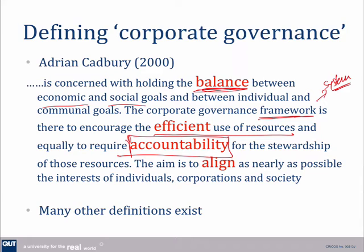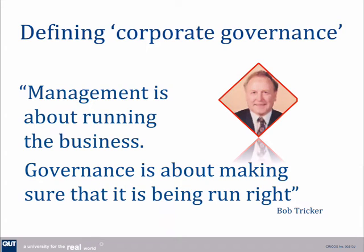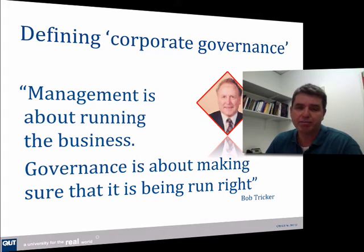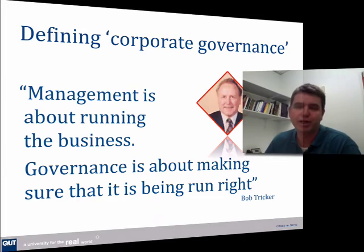Because the company is a separate legal entity, we need to think about how we're going to get accountability and alignment into the system. In reality, there is no one single definition that works well. The one that strikes me as practically important is Tricker's later definition, where he says that if we're going to talk about how companies are run, you've got to be able to differentiate between management and governance. Management is about running a business, and governance is about making sure that business is run right.